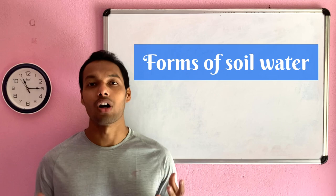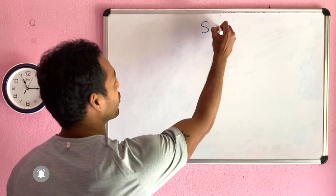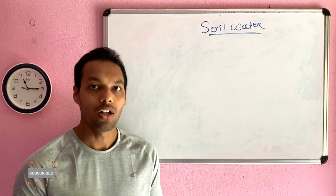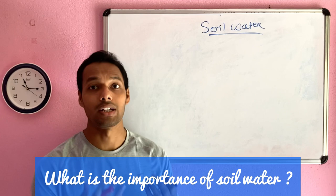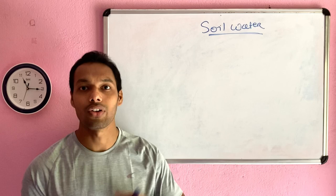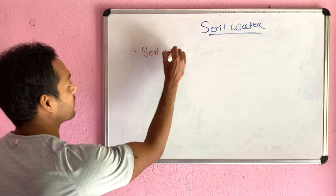In today's lecture we will talk about different forms of soil water and different concepts of water availability propounded by different scientists. Soil is a three-component system: soil solid, soil water, and soil air. Soil water is very important and essential for different soil activity, nutrient dynamics, soil health, to sustain crop growth and productivity. Soil water is also helpful for photosynthesis and different plant activities.